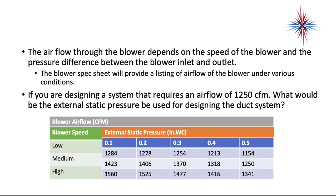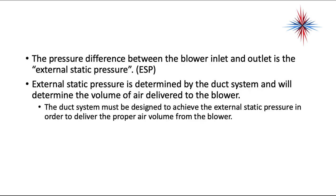A 0.5 inch water column is a standard for maximum external static pressure, but it's very important to check the blower spec sheets — this is just an example. The pressure difference between the blower inlet and outlet is the external static pressure. External static pressure is determined by the duct system and determines the volume of air delivered. The duct system must be properly designed to achieve the correct external static pressure in order to deliver the proper air volume.